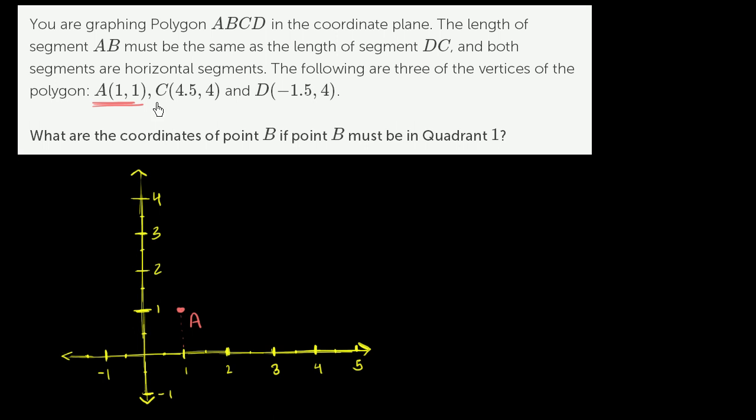Vertex C is at the point 4.5 comma 4. So 4.5 along the horizontal axis comma 4. We go all the way up to 4. So that right over there is point C.